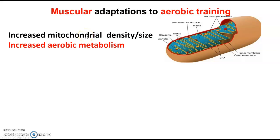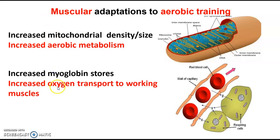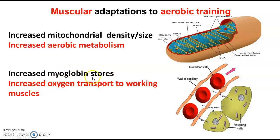The second muscular adaptation is linked to myoglobin stores. You might remember myoglobin — we talked about it in gaseous exchange, during exercise, and the idea of exchanging gases into the muscle cell from the blood. If we exercise, we increase the number of myoglobin stores, which means we can increase oxygen transport to working muscles.